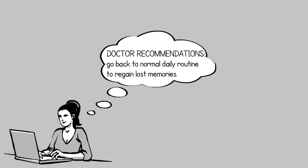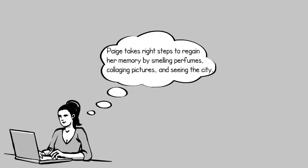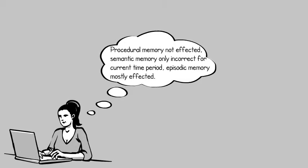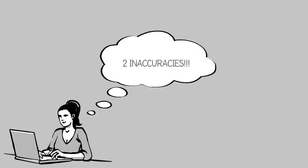Paige's doctor gives accurate recommendations when she advises her to go back to a normal daily routine to regain her lost memories. Paige also takes the right steps to regain her memory by exposing herself to significant items — in theory, these important items will help jog her memory. Her procedural memory is not affected, her semantic memory is only incorrect for the current time period, but her episodic memory is mostly affected — all of which are typical effects of temporally graded retrograde amnesia.